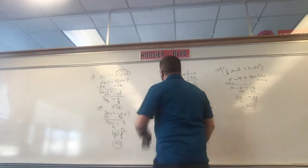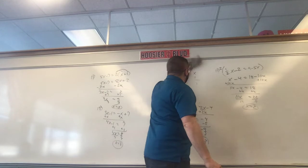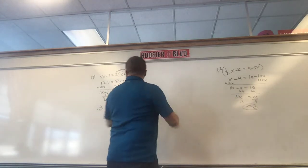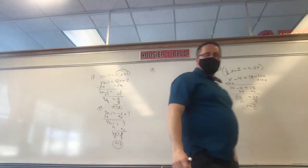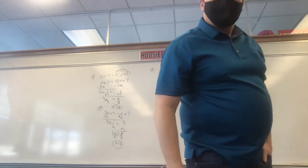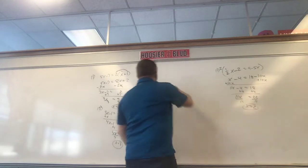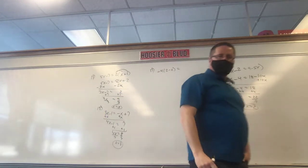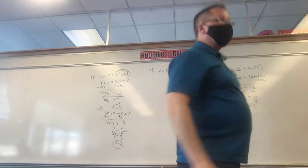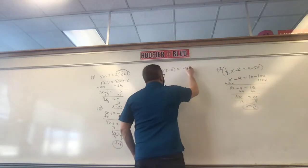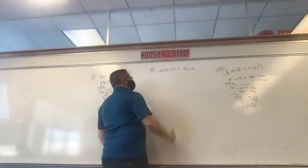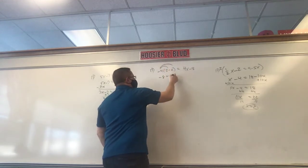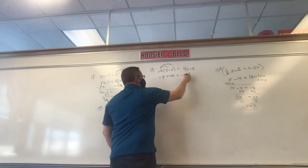Number 17. This is a little different, but we have talked about it recently. You've got to think about what we did four or five months ago and what we've been doing the last week. We have negative 4 times (2 minus x). Let's distribute: negative 8 plus 4x equals 4x minus 8.